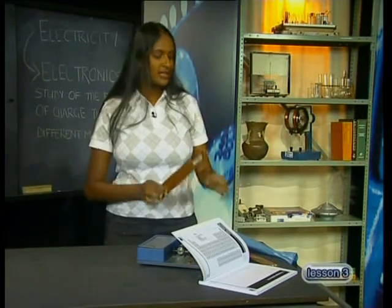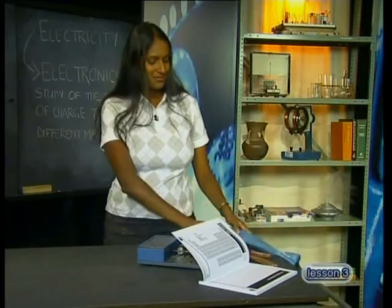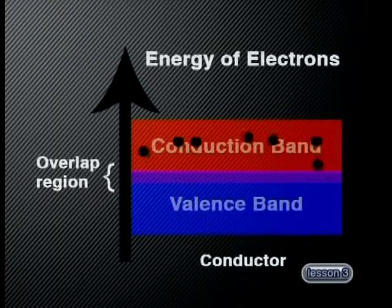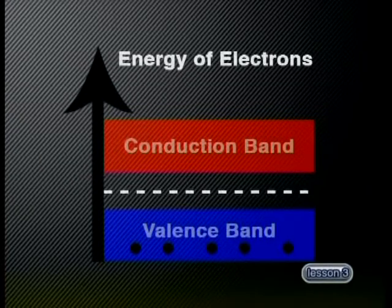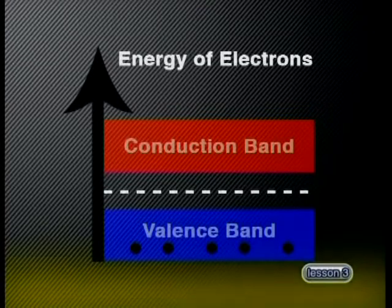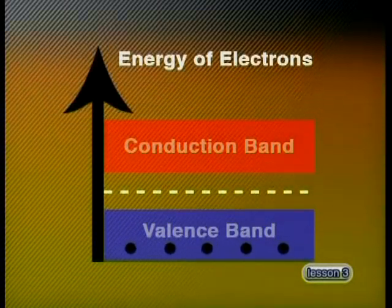In our previous lessons, we investigated what happens when a potential difference is applied across the ends of different materials, including conductors and insulators. We used energy band theory to show why conductors allow charge to flow through them, and why insulators do not allow charge to flow, except under extreme conditions of high potential difference and high temperature.